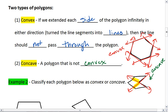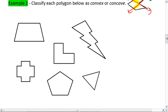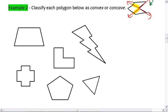So in example two, you're given all polygons. I want you to determine which ones are convex and which ones are concave. Try this on your own first, and then go to the next video when you're ready to check your solution.